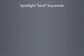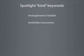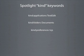We can narrow our search criteria even more by using our own phrases in conjunction with the built-in keywords. For example, we could add the word "TextEdit" to "kind:applications" to find only applications that relate to TextEdit. Or we could add "documents" to "kind:folders" to list only folders that relate to documents. And finally, we could add "TCPIP" to "kind:preferences" to only list System Preferences that relate to TCP.